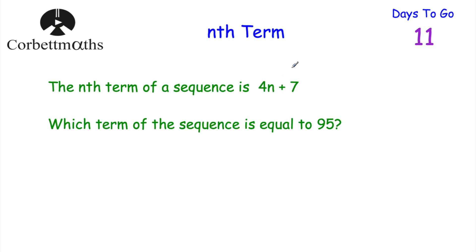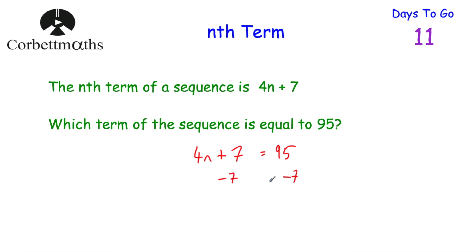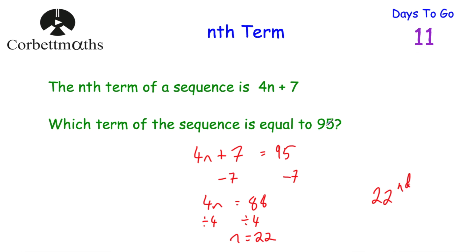We've been given the nth term 4n plus 7, and asked which term of the sequence is equal to 95. We write 4n plus 7 equals 95 and solve. Take away 7 from both sides: 4n equals 88. Divide by 4: n equals 22. So the 22nd term of the sequence is equal to 95. And if you got that, well done.